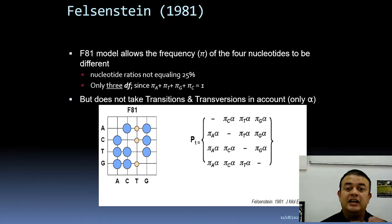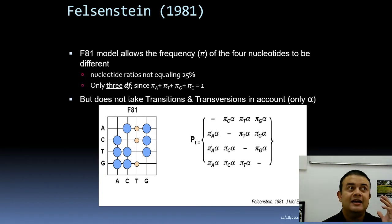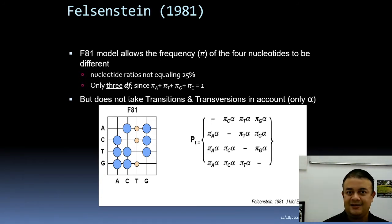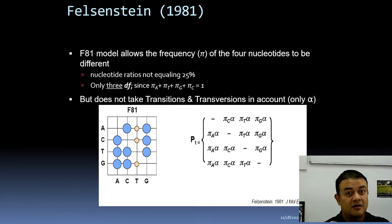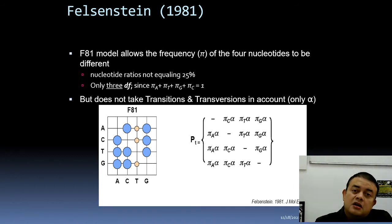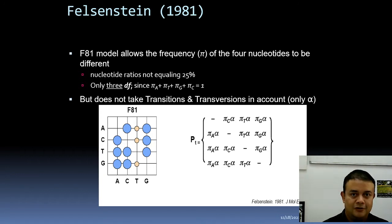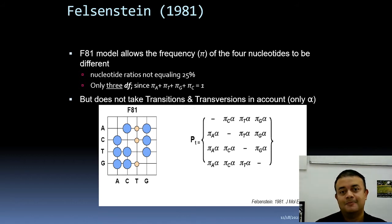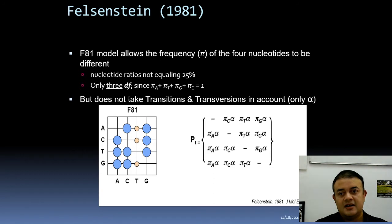As degree of freedom increases, the model becomes more relaxed and complicated, and error rate also increases. A simple model has less error but a rough fit; a complicated model fits well but has a higher error rate. You need a fine balance, which is why you select the best-fitting model using maximum likelihood-based tests — covered in the next class.